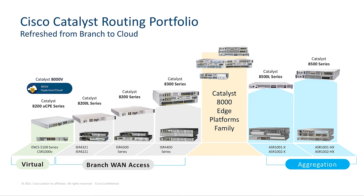This slide talks about the product transition from the older generation of ISR and ASR WAN portfolio to the new generation Catalyst 8000 Edge platform family, from branch to aggregation and to the cloud. Today, we will talk about the branch WAN access platforms highlighted in grey — the ISR 4Ks transitioning to Catalyst 8300 and 8200 Series Edge platforms.